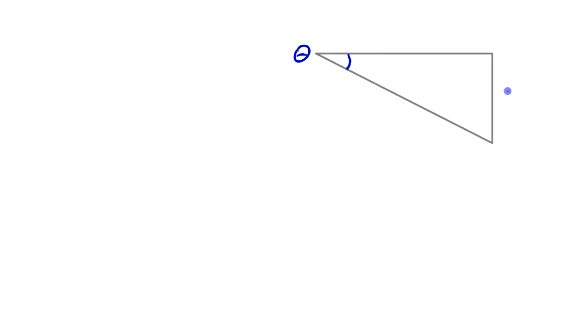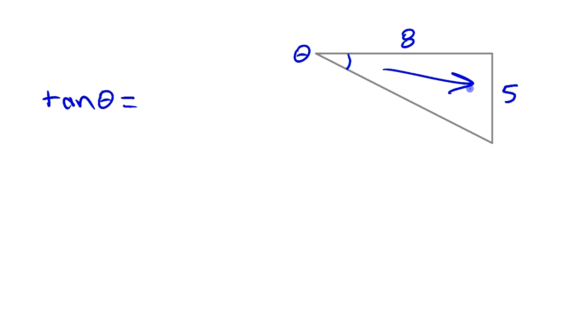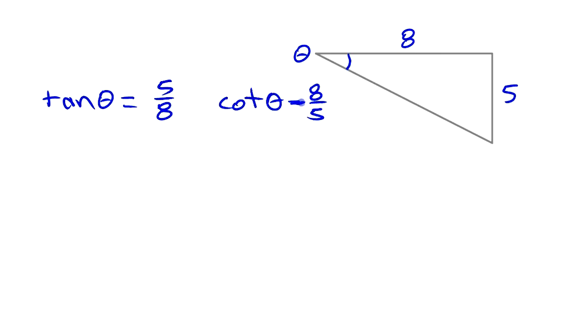Let's draw a right triangle with two legs. Looking at angle theta, let's say one leg is five and the other is eight. The easiest two ratios to write with just those two sides are tangent and cotangent, since we have the opposite and adjacent sides. Tangent of theta is opposite over adjacent, so five over eight. That means cotangent is just eight over five — they're reciprocals.